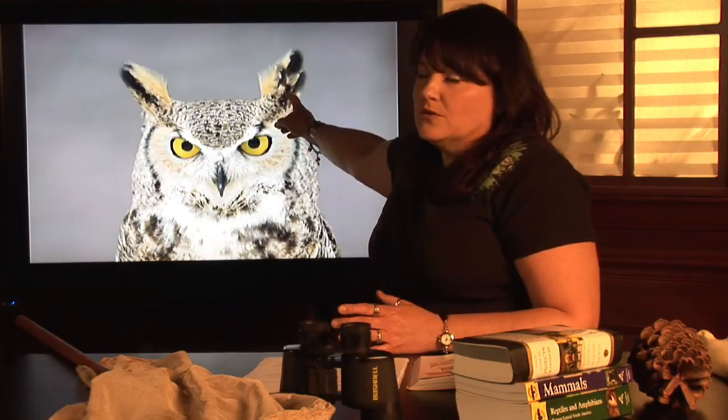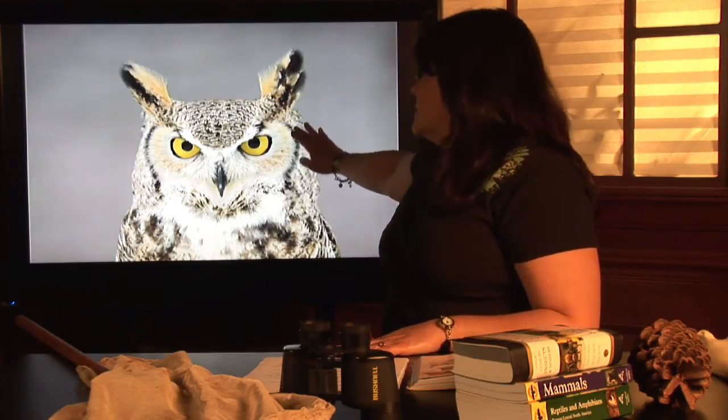The most distinctive feature on the great horned owl is its horns, which are, of course, actually not horns at all. They're just tufts of feathers that are located slightly above their ear opening. That's where their name comes from, the great horned owl.